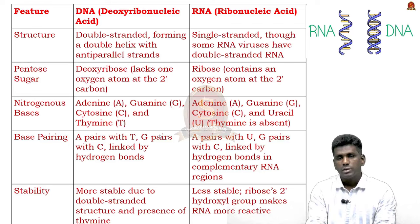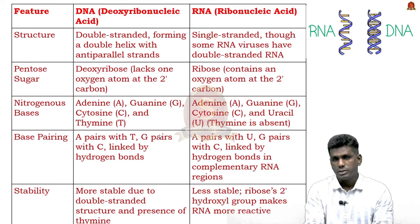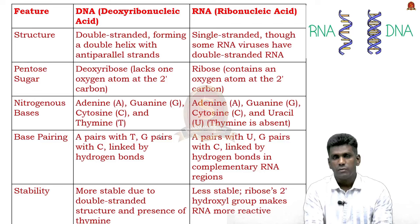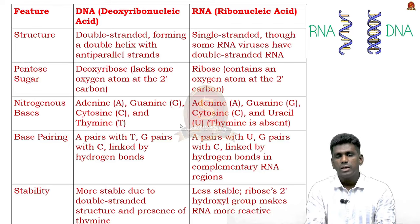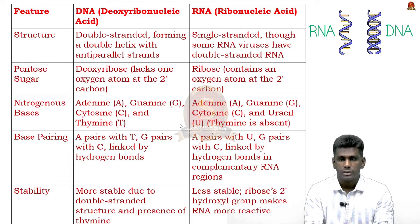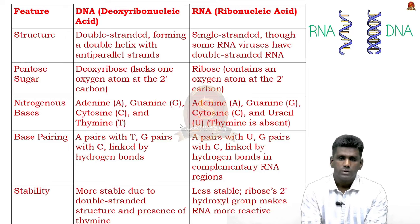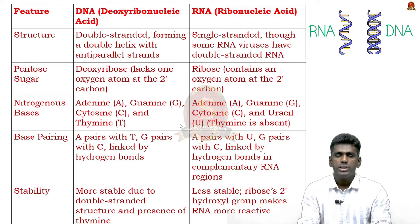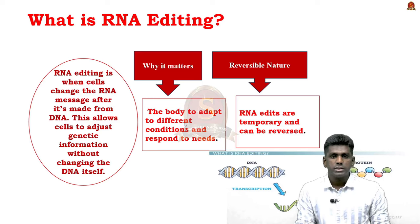The key function of DNA is to store and transmit genetic information, while RNA is mainly involved in protein synthesis, gene regulation, and serving as genetic material in some viruses. In terms of location, DNA is found in the nucleus of eukaryotes — and sometimes in mitochondria and chloroplasts — while RNA is synthesized in the nucleus but functions in the cytoplasm and ribosomes.